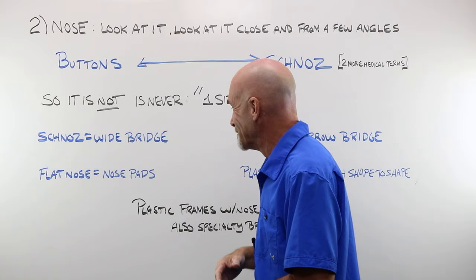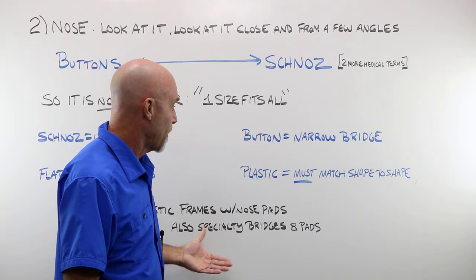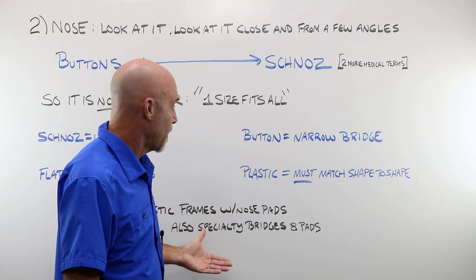If you have a very flat nose, a very flat bridge, then you generally want a frame with nose pads so you can lay those flat, put some silicone on there, and have that frame grab a little bit. And then you've got your entire category of plastic frames, and those simply must match shape to shape. Let's take a look at that.